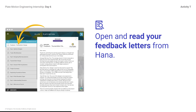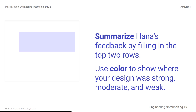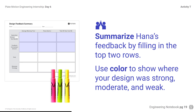Open and read your feedback letters from Hanna. Open your feedback letters labeled Feedback Tsunami Alert Design in your workspace inboxes. Take a few minutes to read or reread the letter independently. Summarize Hanna's feedback by filling in the top two rows. Use color to show where your design was strong, moderate, and weak. Record notes in the table and color code the feedback, as this acts as a quick reference to identify where your designs were successful and where they need work.